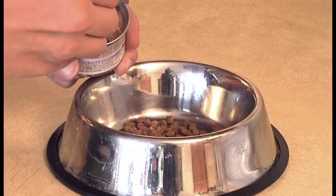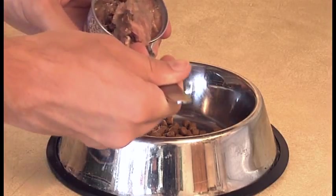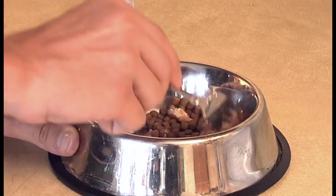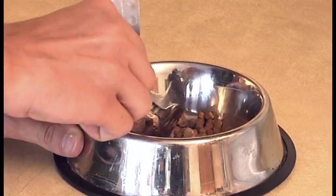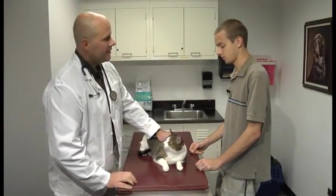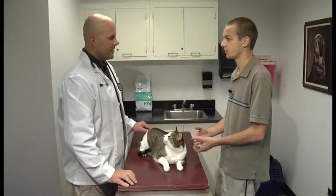Once a food allergy has been identified, the basic approach to managing this condition is to permanently remove the allergenic ingredient from your cat's diet. Your veterinarian will help you select a balanced diet that is suitable for the long-term management of your pet's food allergy.